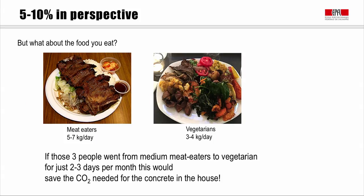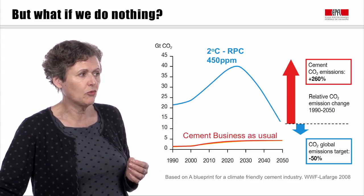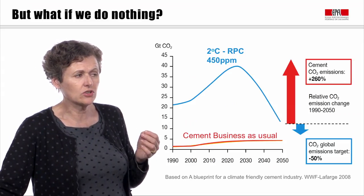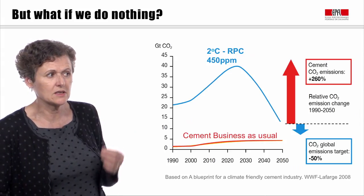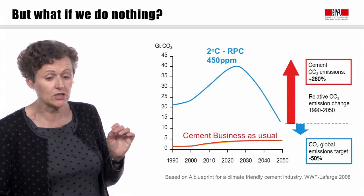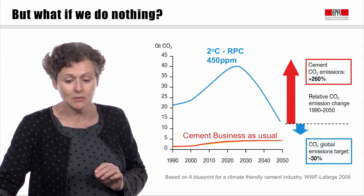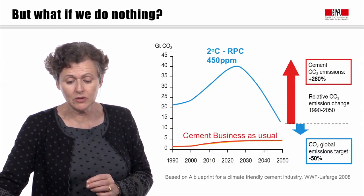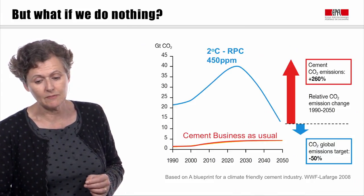Rather than just blaming the producers of these materials, we have to think about what we're doing in our lives and what we choose to do that produces CO2. There's no reason for complacency though, because if we did nothing about the CO2 footprint of cementitious materials, we could end up in a situation like this. The blue line is the trajectory estimated to restrict global warming to a two-degree temperature rise. If we achieved that blue line but did nothing about cement, then by 2050 cementitious materials would be responsible for something like 30% of world CO2 emissions, which is clearly unacceptable.